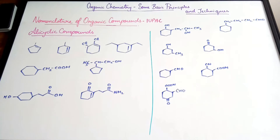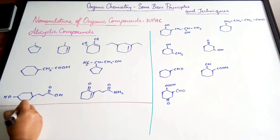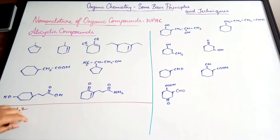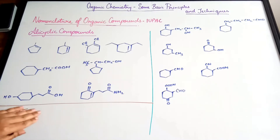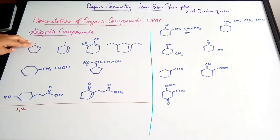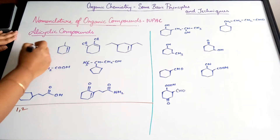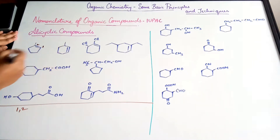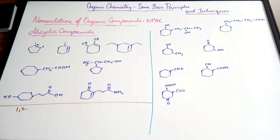The double bond gets locants one and two. The substituents are then numbered in terms of the first point of difference rule. Here we just have one substituent, so it's straightforward — we assign the numbers such that the double bond is in the first position.